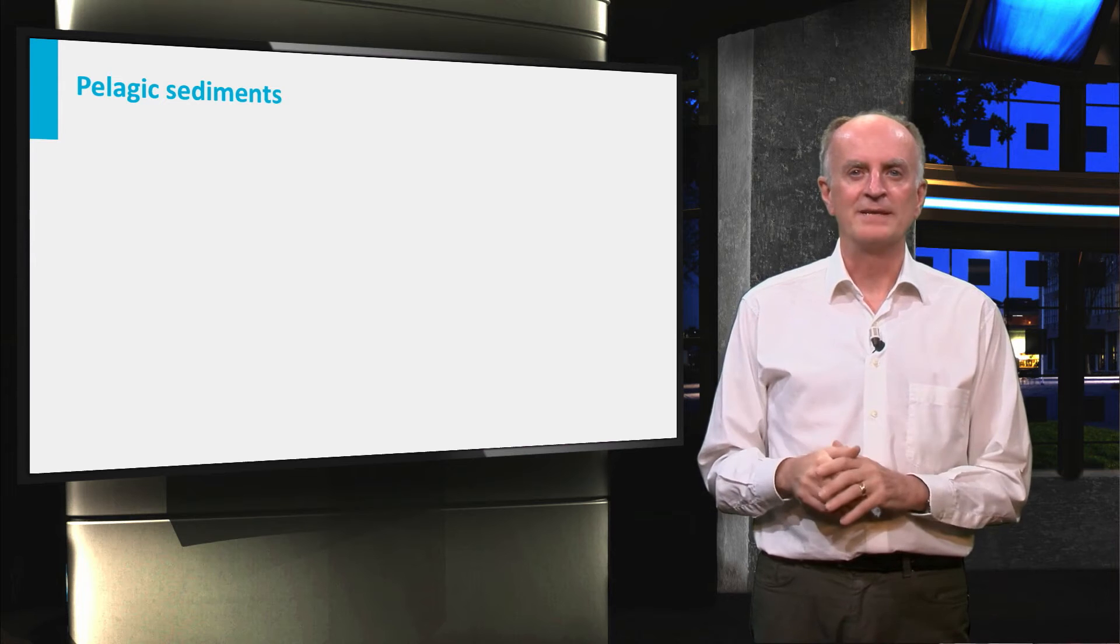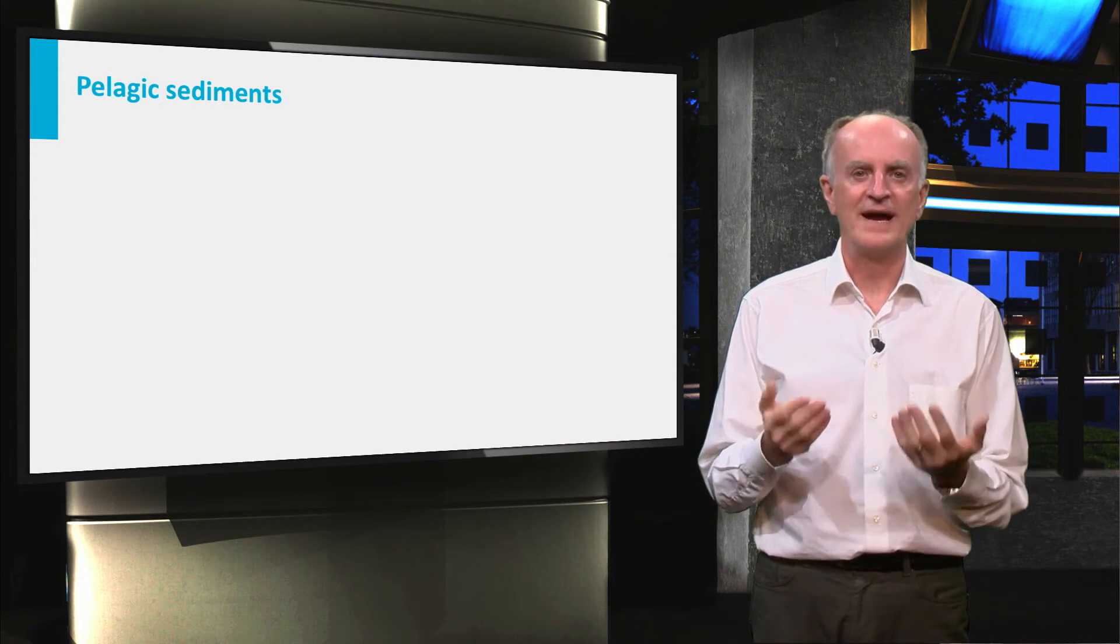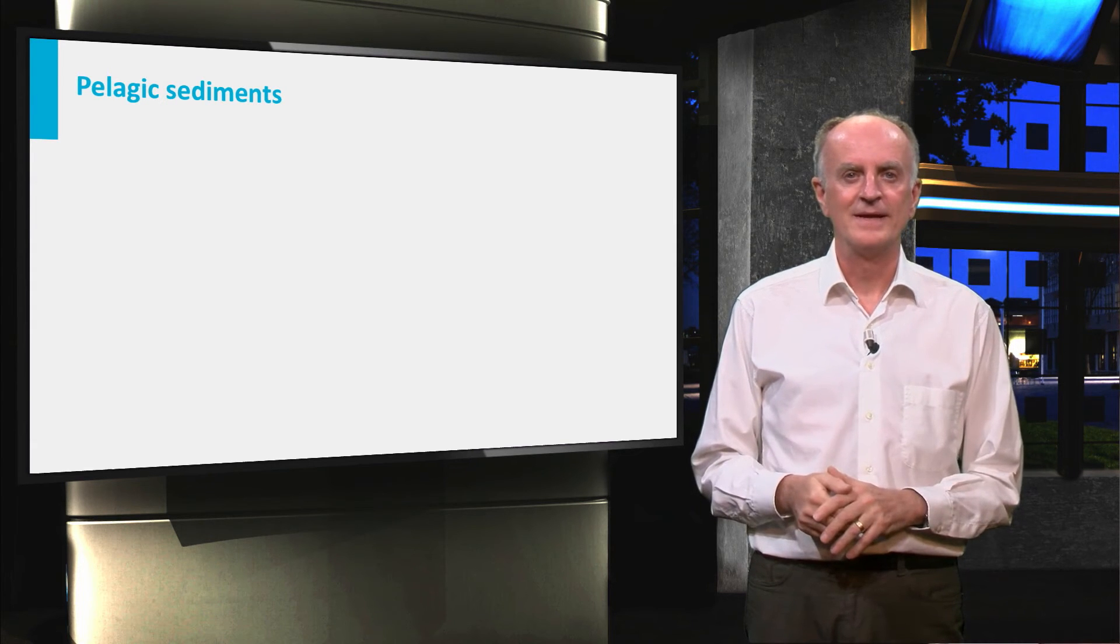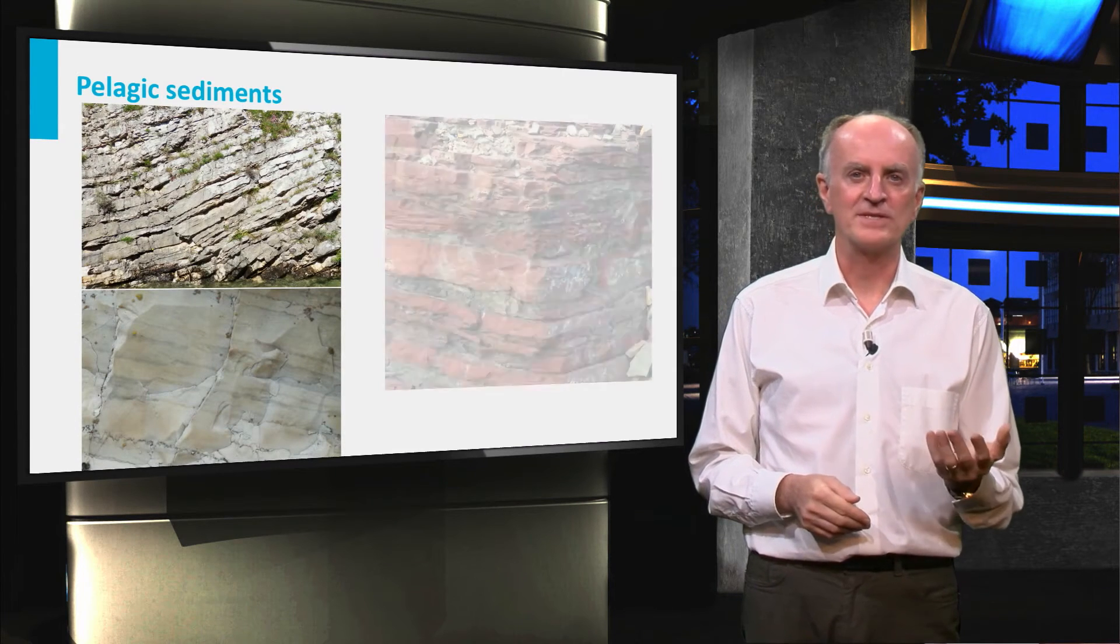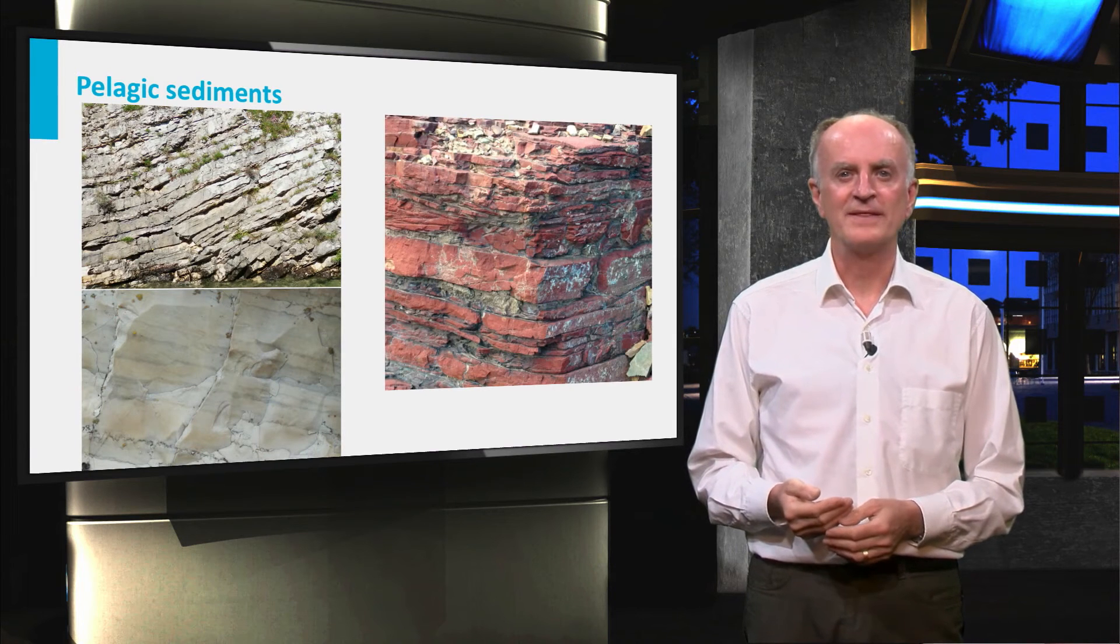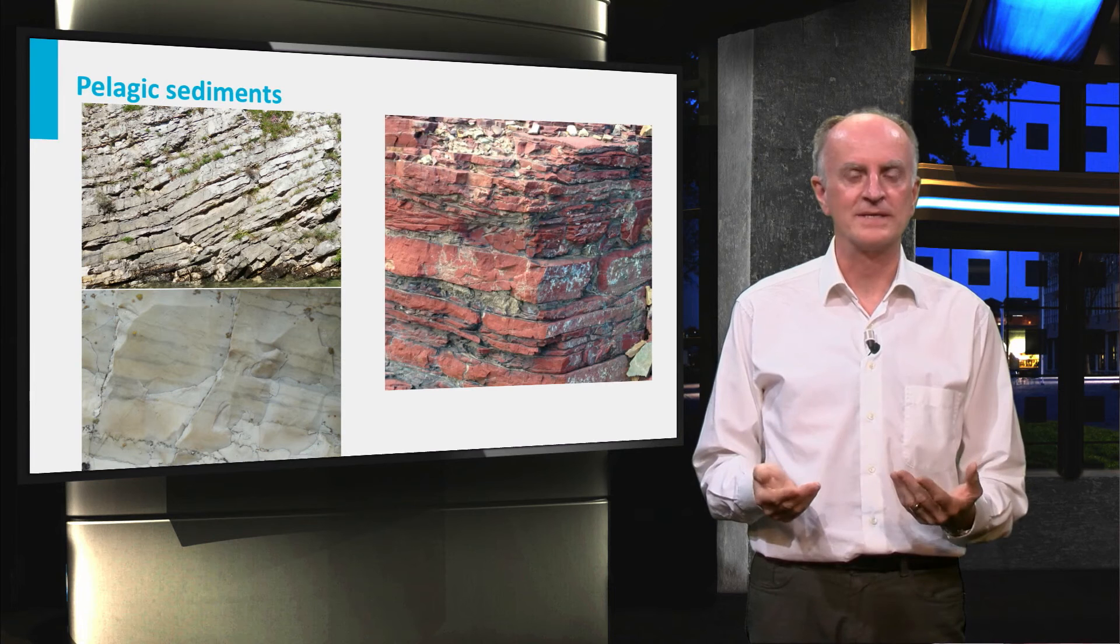These are called pelagic sediments. Pelagic sediments, once they have been lithified, are fine-grained, homogeneous, and very well stratified. Limestone-rich sediments are often white. Silica-rich pelagic sediments are often more colorful, partly because of the fact that they lie a long time on the sea floor and are thus oxidized.